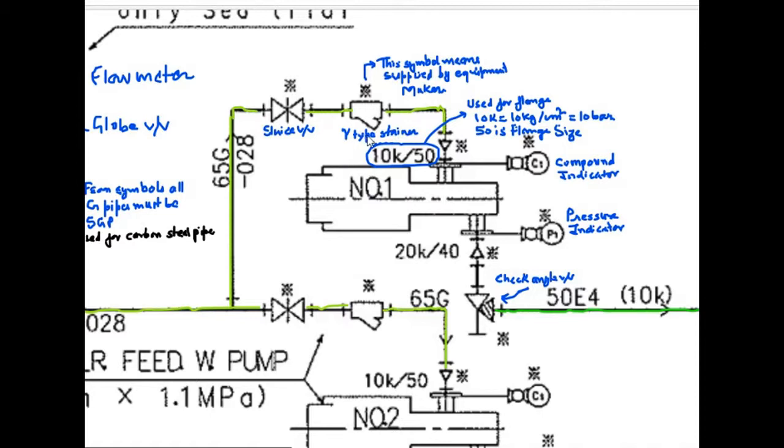Y type strainer is given. Now, one thing is written. You can see 10K 50. This symbol is used for flanges which can withstand pressure of 10 bar. 10K means 10 kg per centimeter square. And 50 is flange size. It is not the diameter of flange. Flange size is different. There is a chart in which you can find the various specification of the flange.